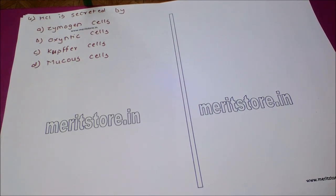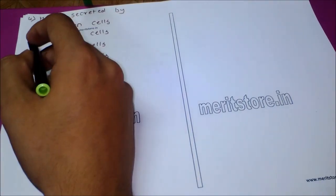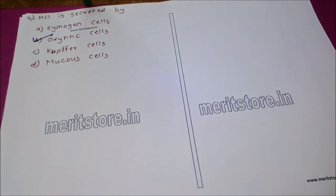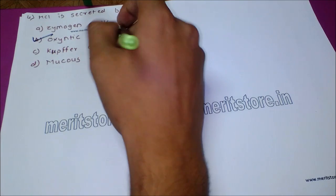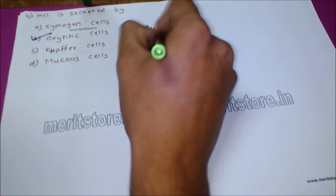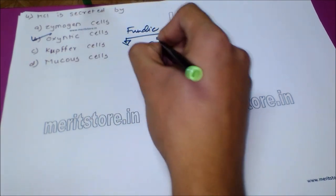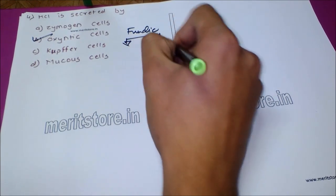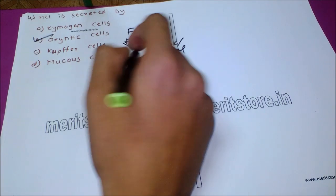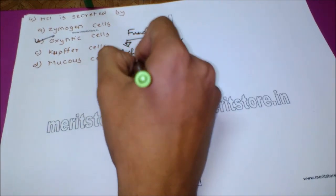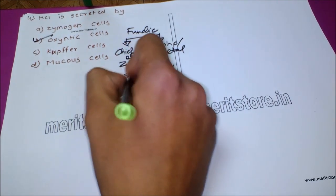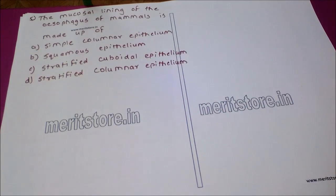The next question: HCl is secreted by — option A: zymogen cells, option B: oxyntic cells, option C: Kupffer cells, option D: mucus cells. The correct answer is option B, oxyntic cells. The fundic part of the stomach consists of two types of cells: the chief or zymogen cells which secrete pepsin, and the oxyntic or parietal cells which secrete HCl. So the correct answer is option B, oxyntic cells.